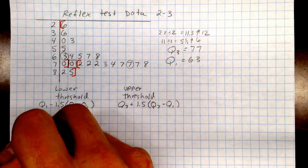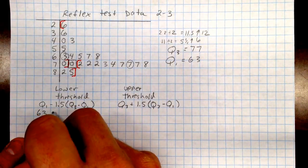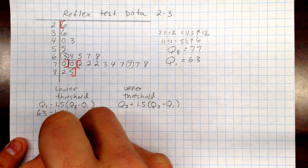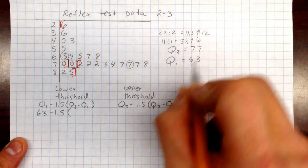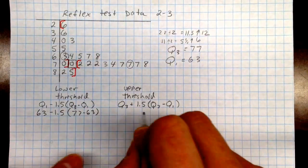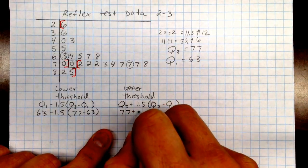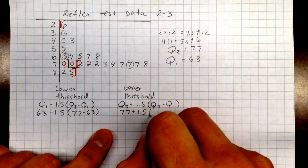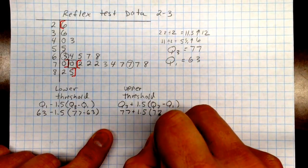So this is Q1, let's say that's 63. So it takes 63 minus 1.5 times 77 minus 63. And over here, 77 plus 1.5 times 77 minus 63.